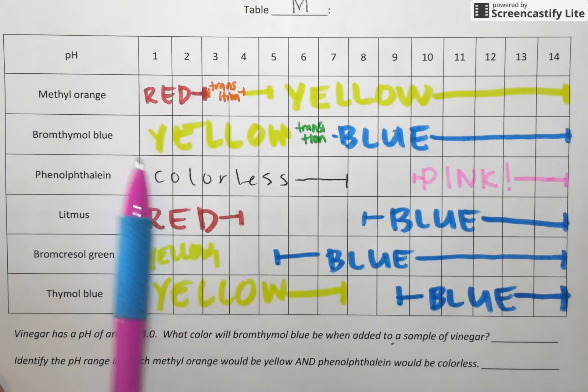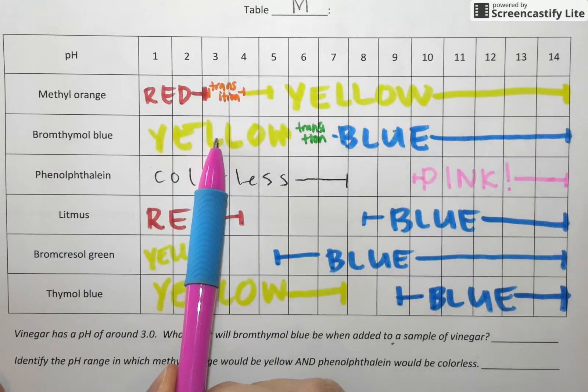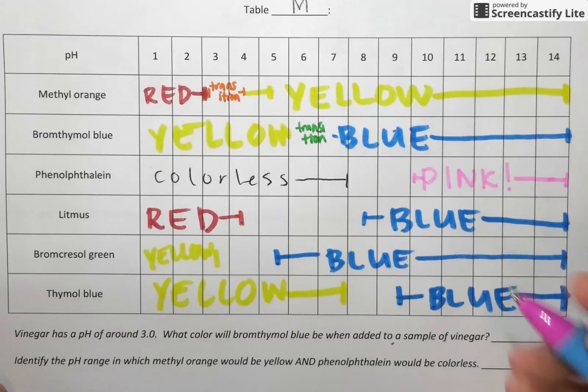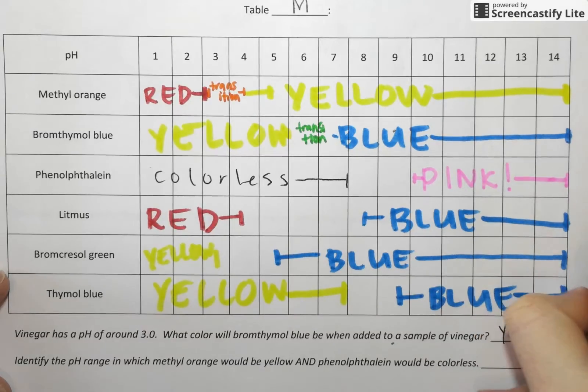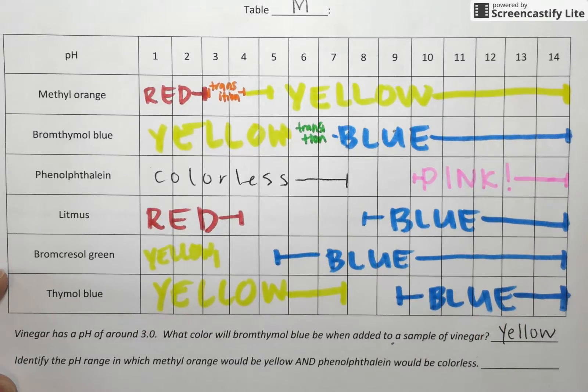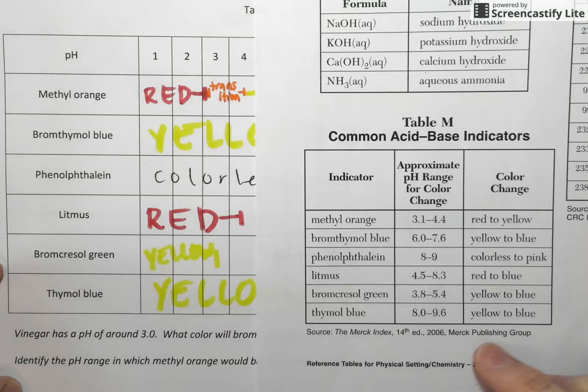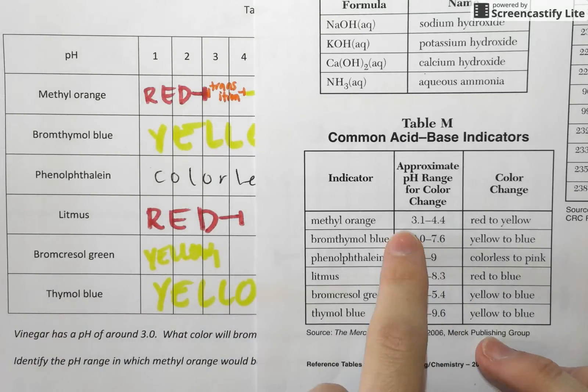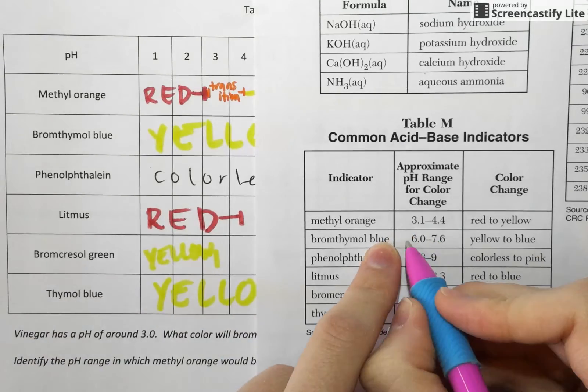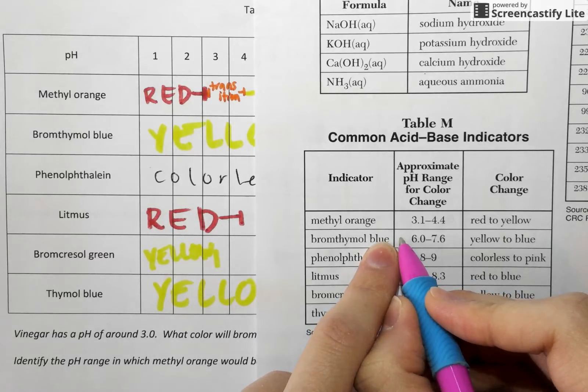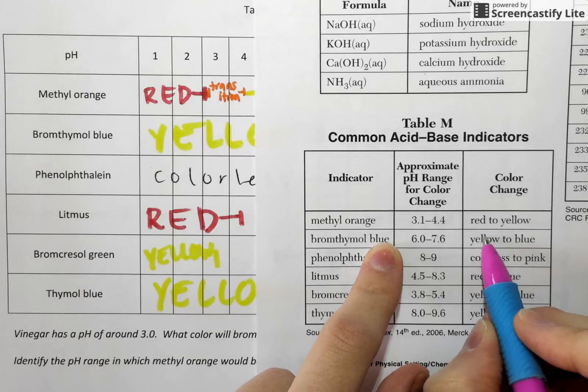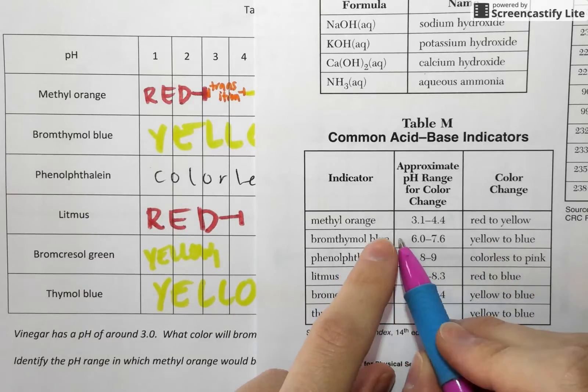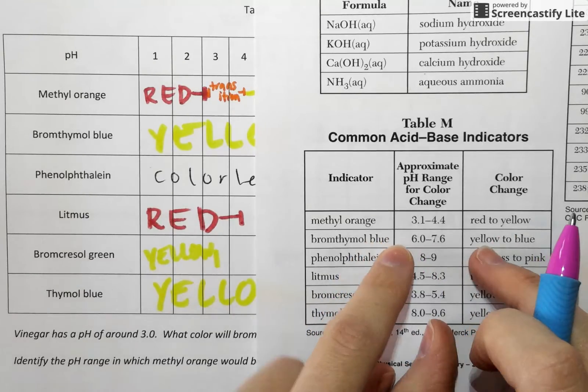If we go up to bromthymol blue, if the pH is 3.0, that's when bromthymol blue is still yellow. You can do this just by looking on table M as well. pH 3.0 would be, if this was a number line, sort of off to the left of 6, right? Because it hasn't hit 6 yet. So it's going to be the color on the left. So we can predict at 3.0, we're still in our yellow territory.